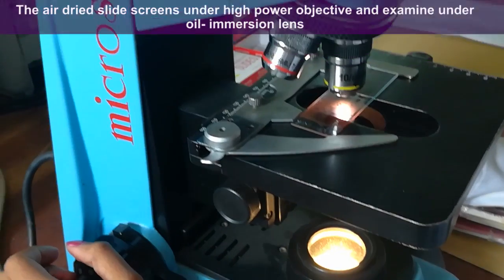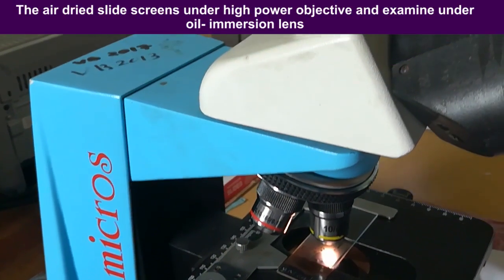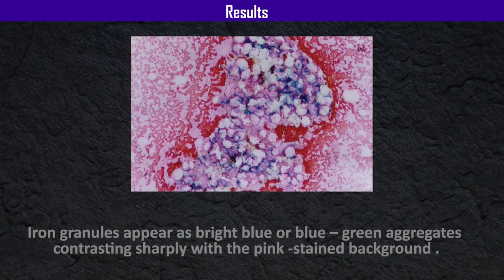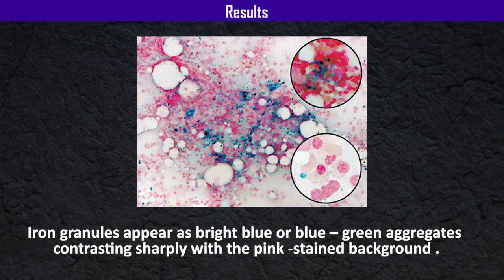The air-dried slide is screened under the high-power objective and examined under the oil-immersion lens. Results: iron granules appear as bright blue or blue-green aggregates, contrasting sharply with the pink-stained background.